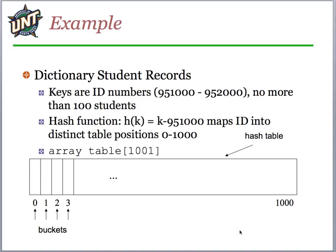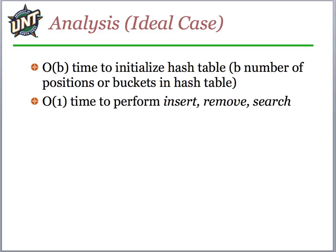Here's an example of student records. We're going to store student records where the keys are student ID numbers. The range of student ID numbers is only about a thousand — from 951,000 to 952,000 — but we won't have more than a hundred students. It wouldn't be efficient to have a thousand storage locations for so few students. So we want a hash function where given a key, we subtract 951,000 from it — the first possible value — mapping into a table of a thousand positions. That's the ideal case: we have a thousand buckets and everyone has one.